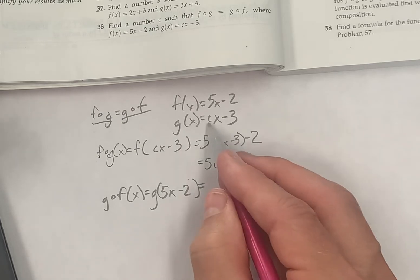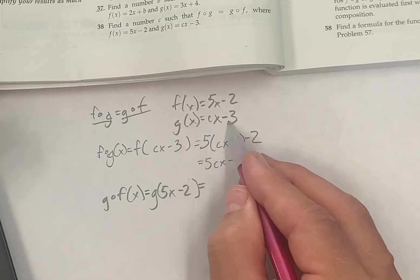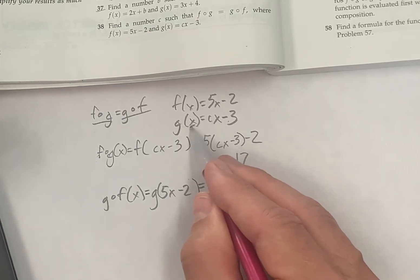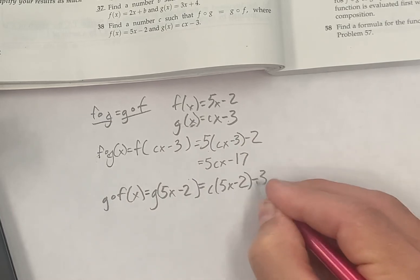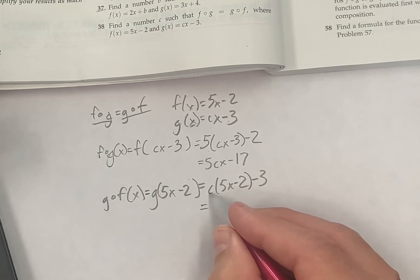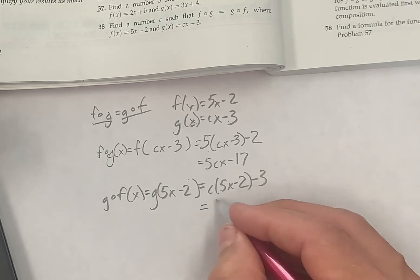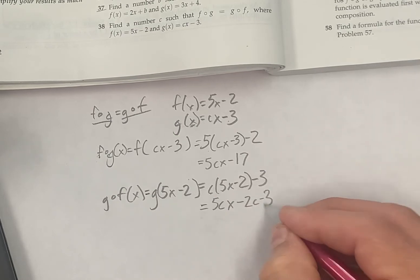Okay, I'm plugging that into the equation for g so I use that as the input. c of 5x minus 2 minus 3. Right, what is that? c times 5x is 5cx minus 2c minus 3.